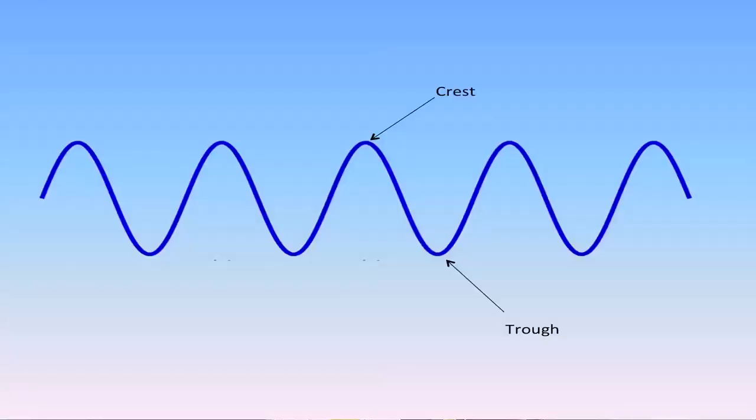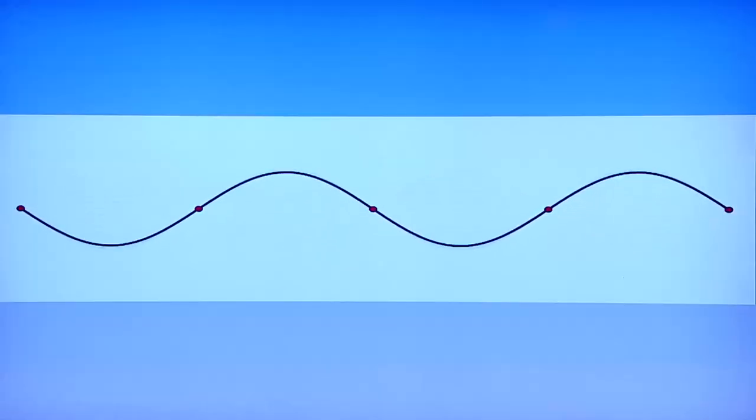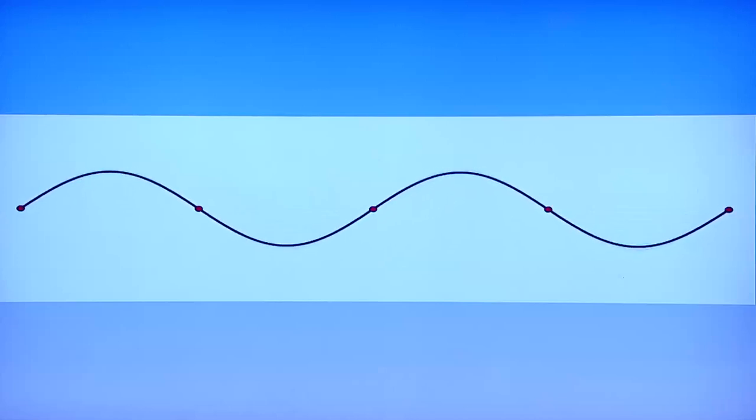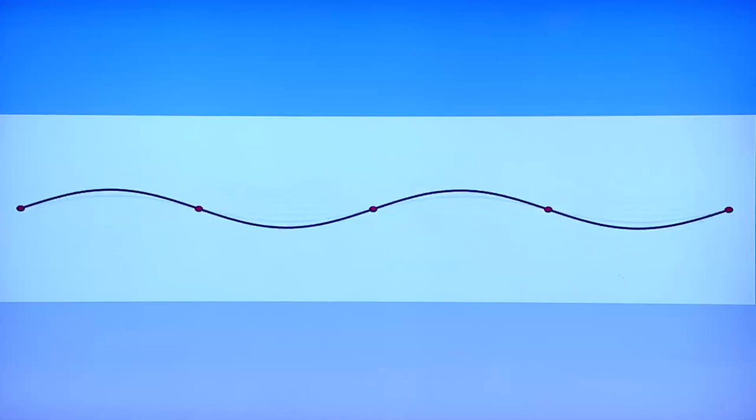Even though there appears to be a movement of material, actually it is only the position of the disturbance that is changing. This is a wave and it is made up of a raised part called crest and the lower part which is called trough. A crest and trough are essentially components of a wave. A wave transfers energy from one point to the other without the medium particles moving from one point to the other. Thus, a wave is clearly different from a particle.